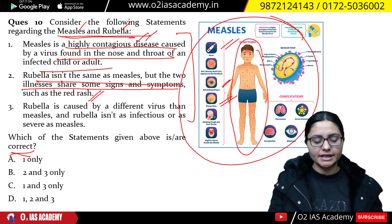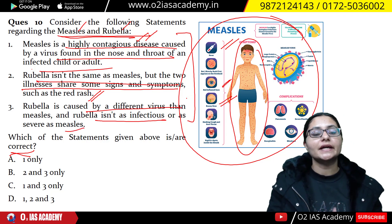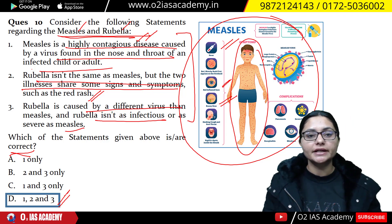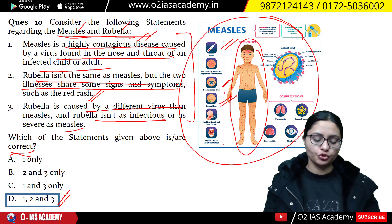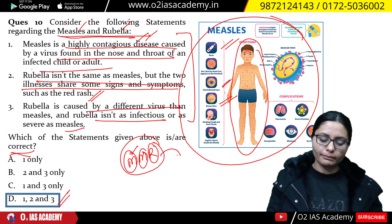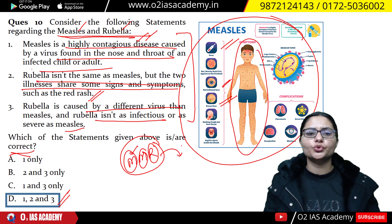Although measles and rubella show similar signs and symptoms, they are not caused by the same virus. All three statements will be correct. Regarding vaccination, there is a vaccine called MMR — that is, Measles, Mumps, and Rubella — which is a common combined vaccine that is provided free of cost. But we are still seeing outbreaks occurring.